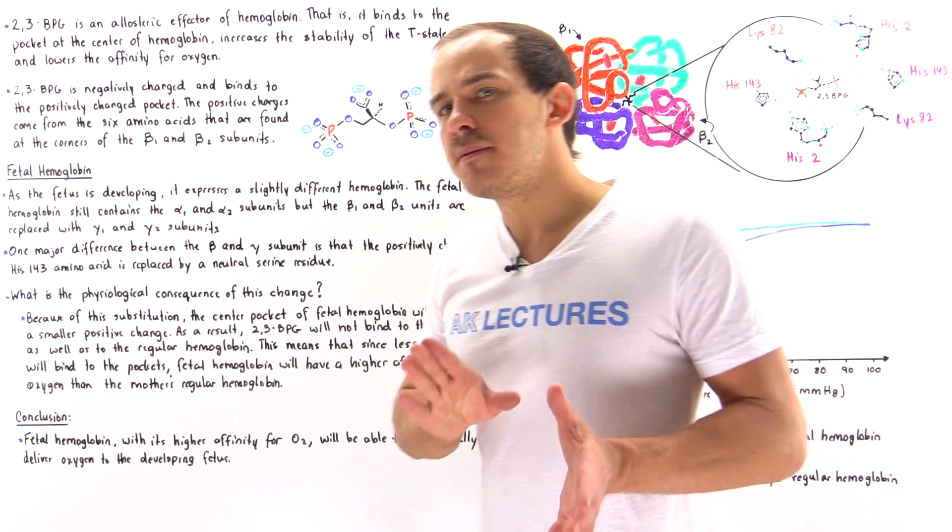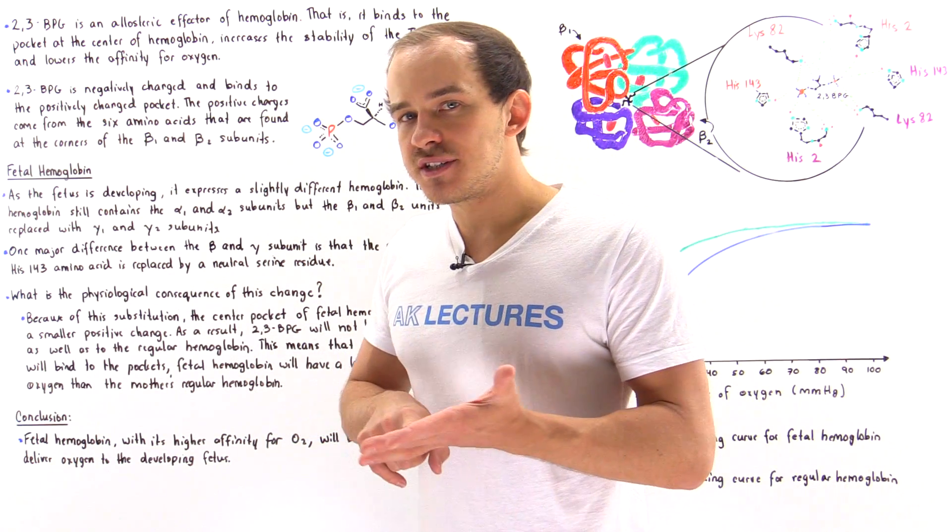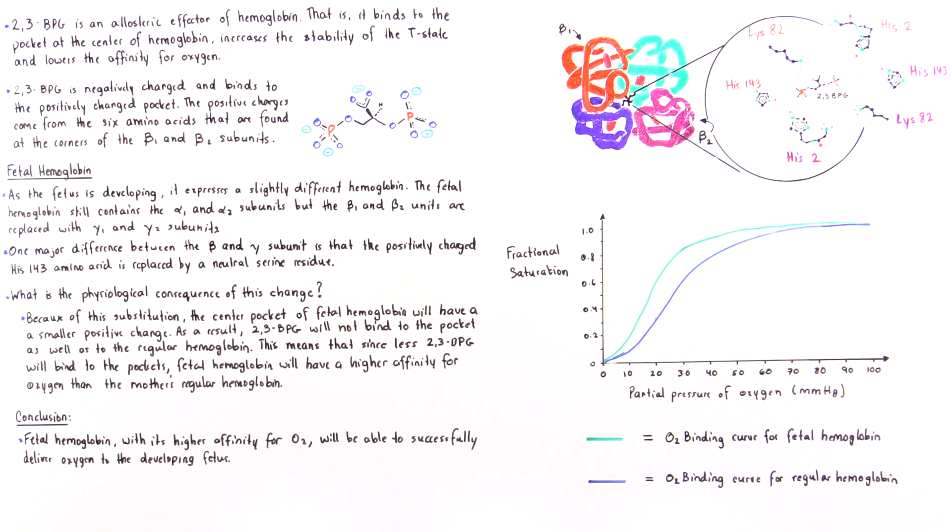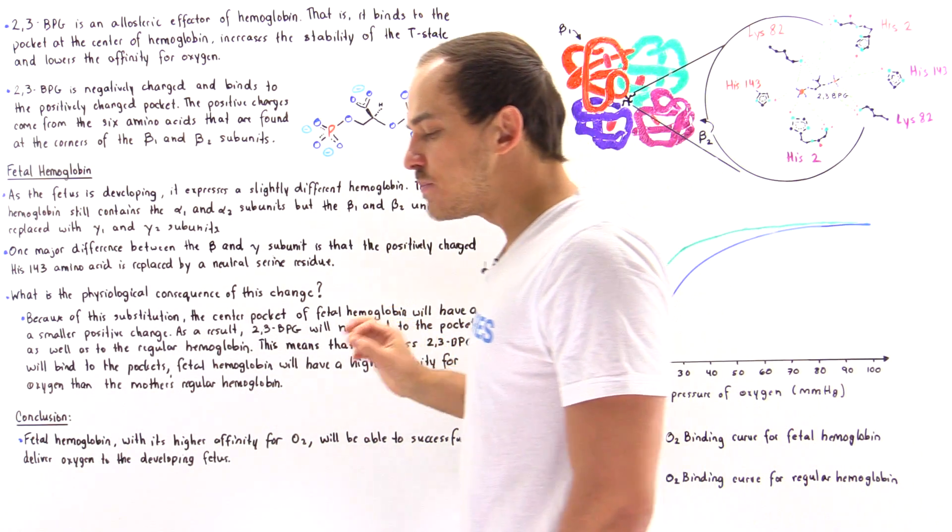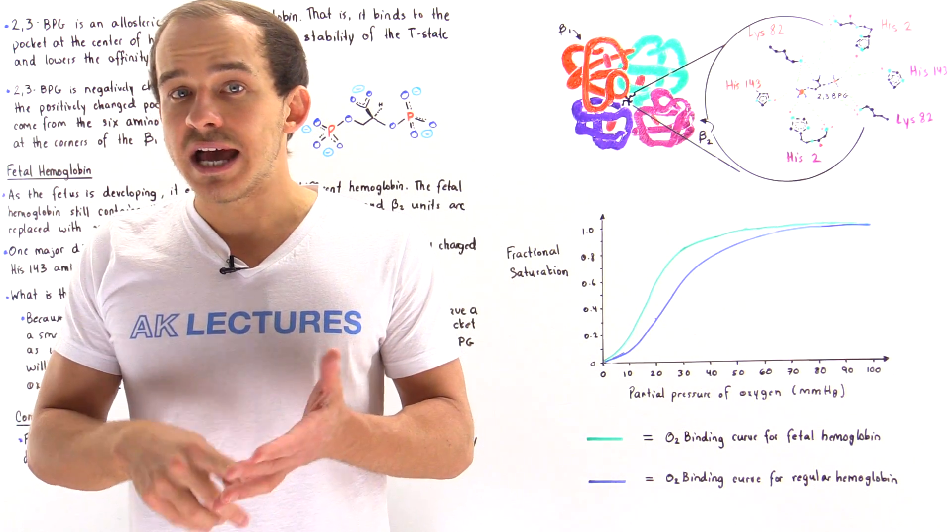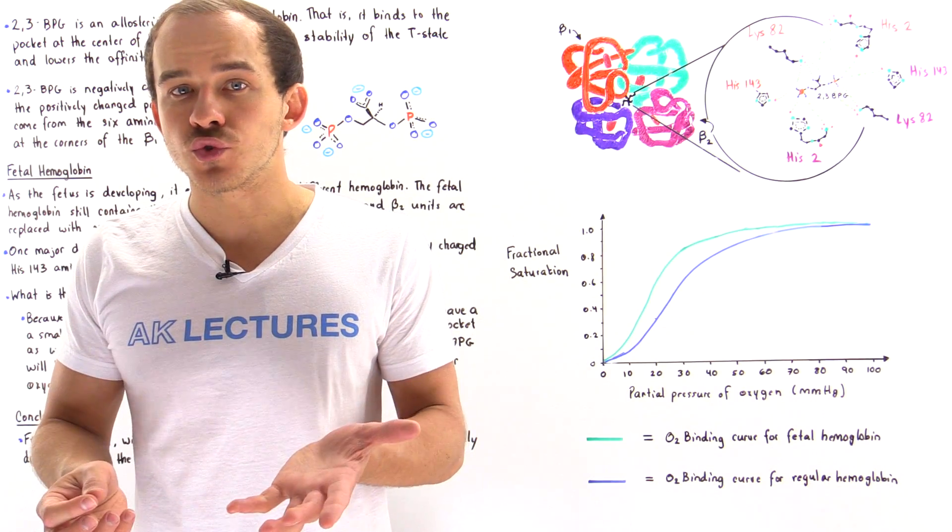What's the major difference between the beta and the gamma subunits? As it turns out, in the gamma subunit, the gamma subunit does not have histidine-143. Instead of histidine-143, histidine is replaced with serine. And serine, as we know, does not have a positive charge. Serine is neutral.